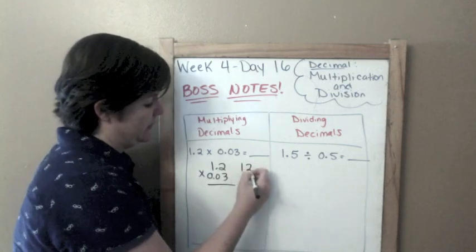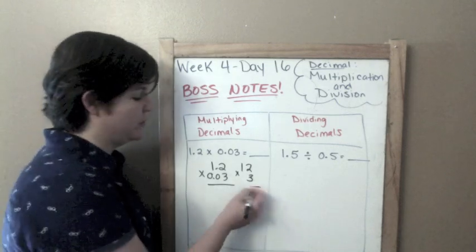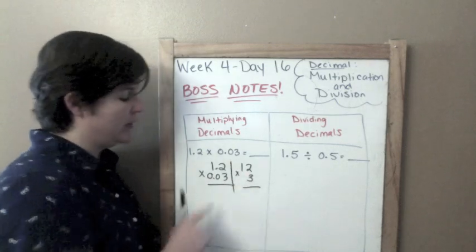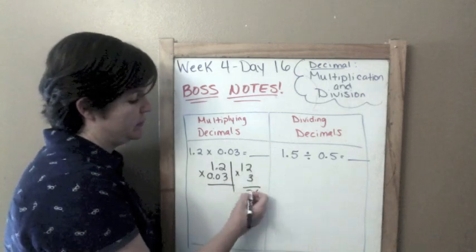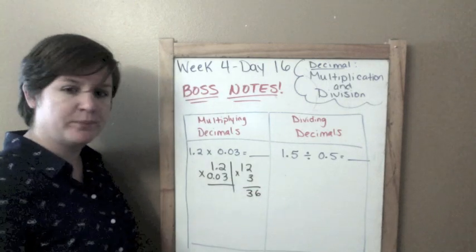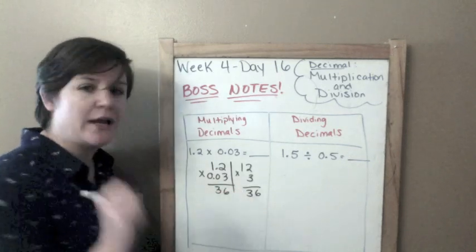So kind of think about it like this. Notice how I didn't put the decimal in this problem over here. 12 times 3 would be 2 times 3 is 6, 3 times 1 is 3, so 36. Or the same thing over here, 36. Now here's what you do.